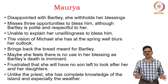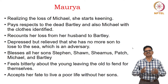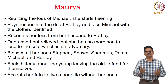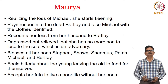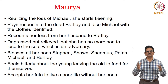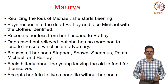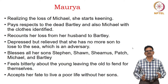Maurya realizes the loss of Michael and starts keening. Until she had hope, she did not keen. But the moment the evidence of the bundle of clothes confirms Michael's death, she starts crying. She pays respect to the dead bodies of Bartley and Michael, and recounts her losses from her husband to Bartley, mentioning the name of her husband and all her sons.